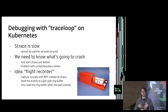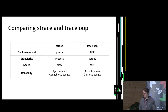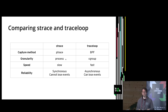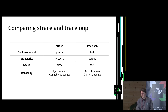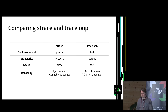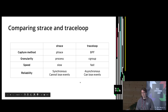Everything is recorded all the time, but not saved permanently — only in memory in a ring buffer — and only when needed do you retrieve this information. Comparing strace and TraceLoop: strace captures syscalls using ptrace, TraceLoop uses BPF. Strace granularity is per process; TraceLoop uses the cgroup level, so all processes in that cgroup are traced. Strace is slow but reliable — synchronous with no lost events. TraceLoop is fast but asynchronous — it writes to a ring buffer, and if the buffer is full, events are overwritten, so it is theoretically possible to lose events.